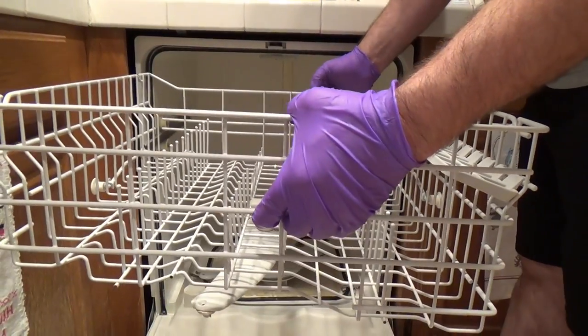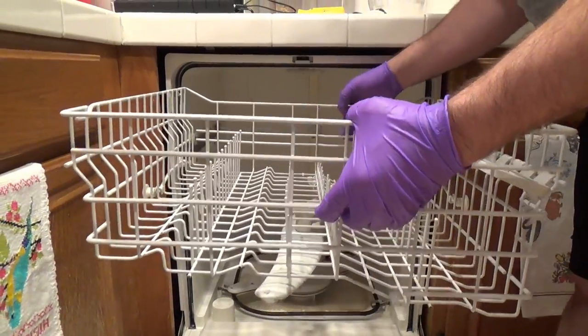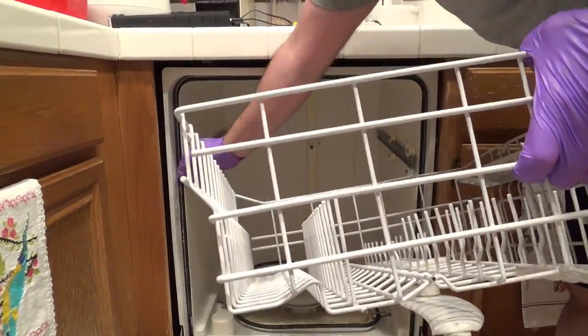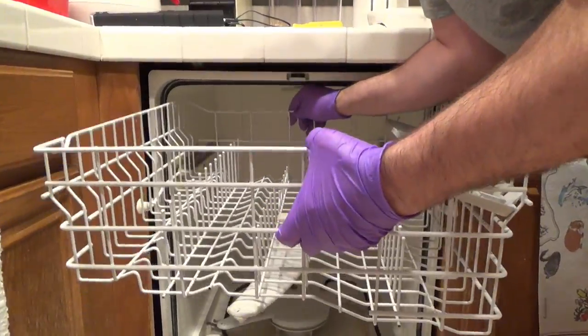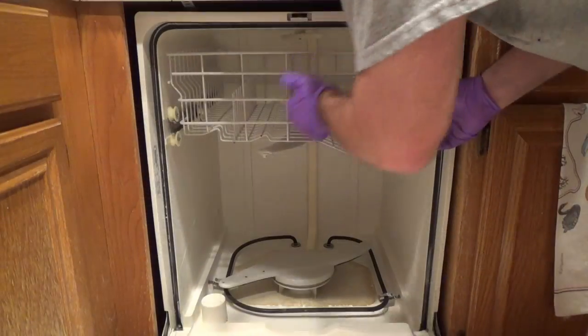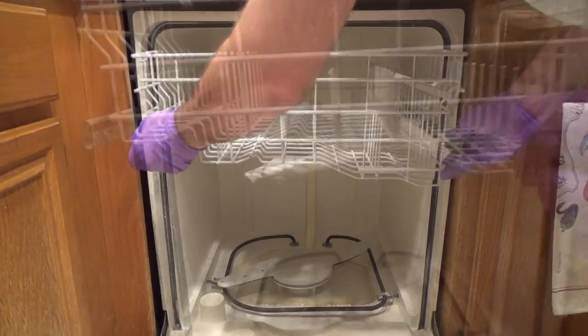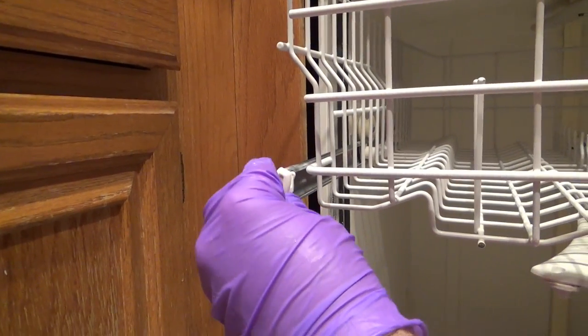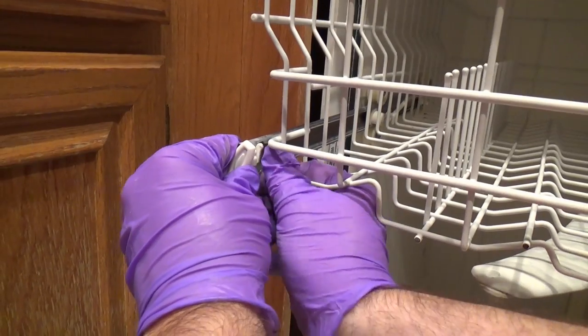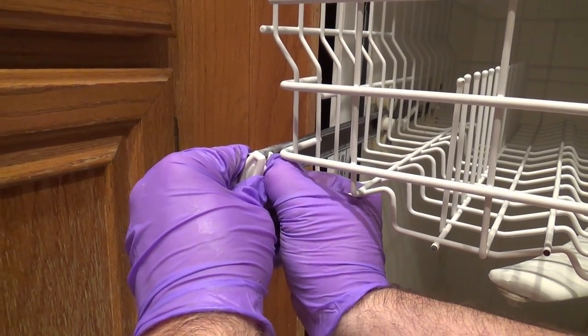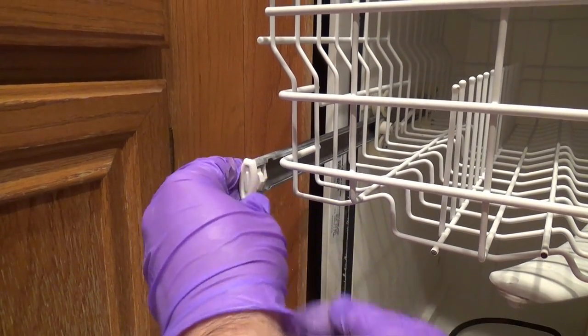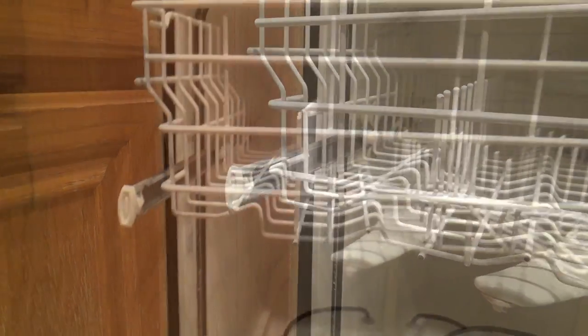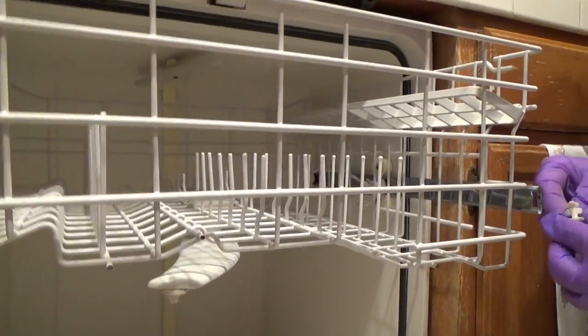And the bottom arm just spins on. So now we're going to put the top rack back in. Making sure the wheels go in and we can put the clip back in again. Just hook it in the bottom and then push this little tab over, and it snaps back into place. Same thing on the other side.